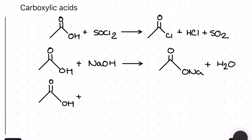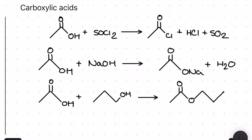Probably one of the most important reactions in the A-level: our carboxylic acid reacting with an alcohol in the presence of an acid catalyst to produce an ester. The ester functional group is incredibly popular in the A-level and is used in lots of spectroscopy questions, so make sure you know your esters inside out.